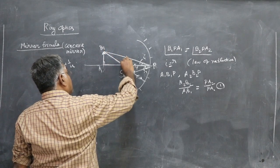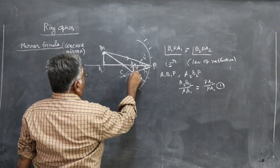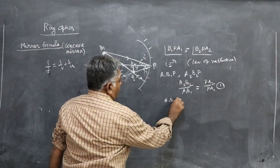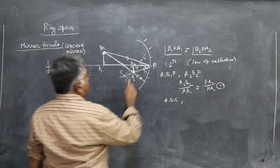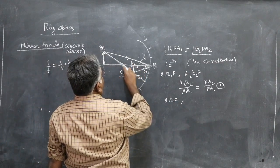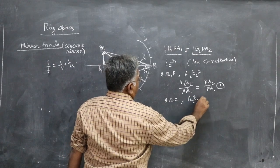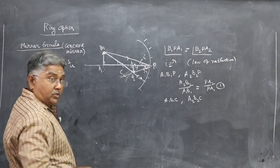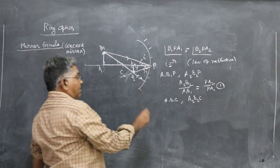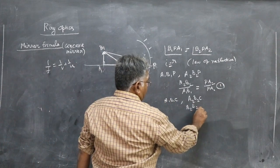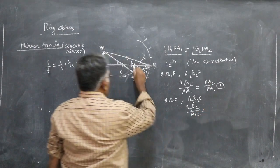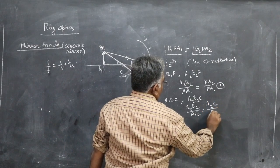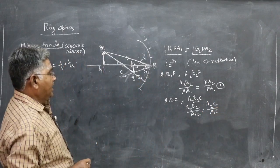Now consider the second pair of similar triangles: A₁B₁C and A₂B₂C. Again, both have a 90° angle, and the angles at C are vertically opposite and therefore equal. So these two triangles are also similar. By the property of similar triangles: A₂B₂ / A₁B₁ = A₂C / A₁C. This gives us equation 2.